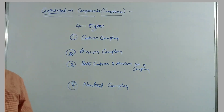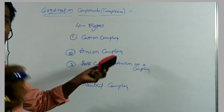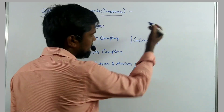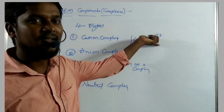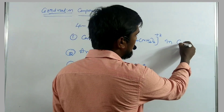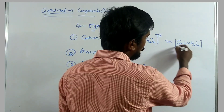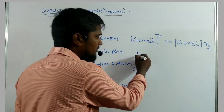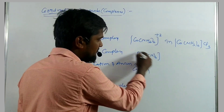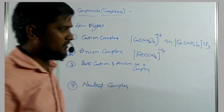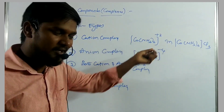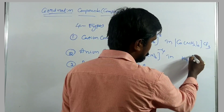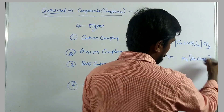A cation complex is one carried by the cation. The best example is [Co(NH₃)₆]³⁺, which is present in [Co(NH₃)₆]Cl₃. The best example of an anion complex is [Fe(CN)₆]⁴⁻, with an overall net charge of minus 4 — it carries a negative charge and is present in K₄[Fe(CN)₆].